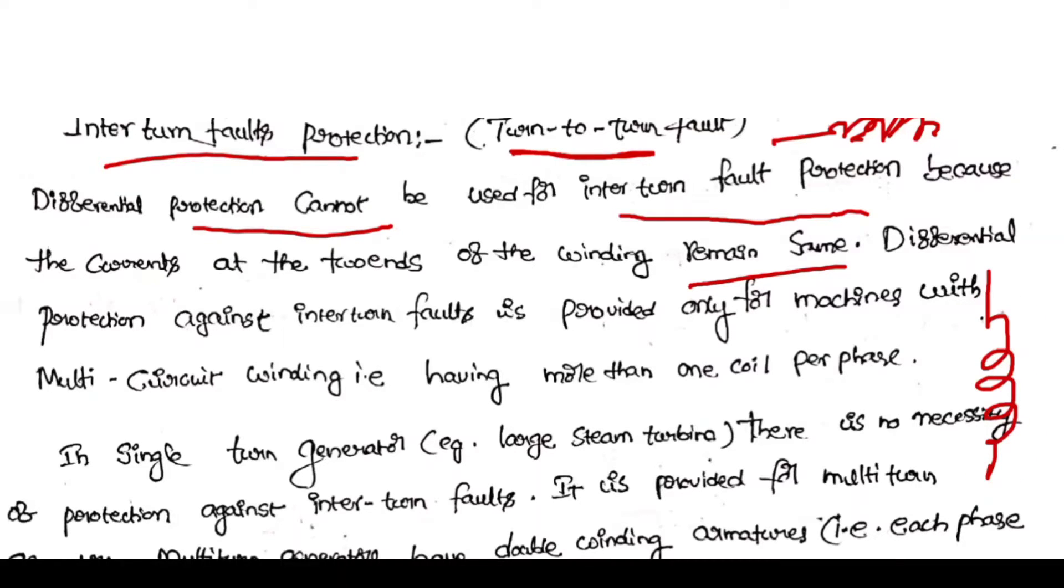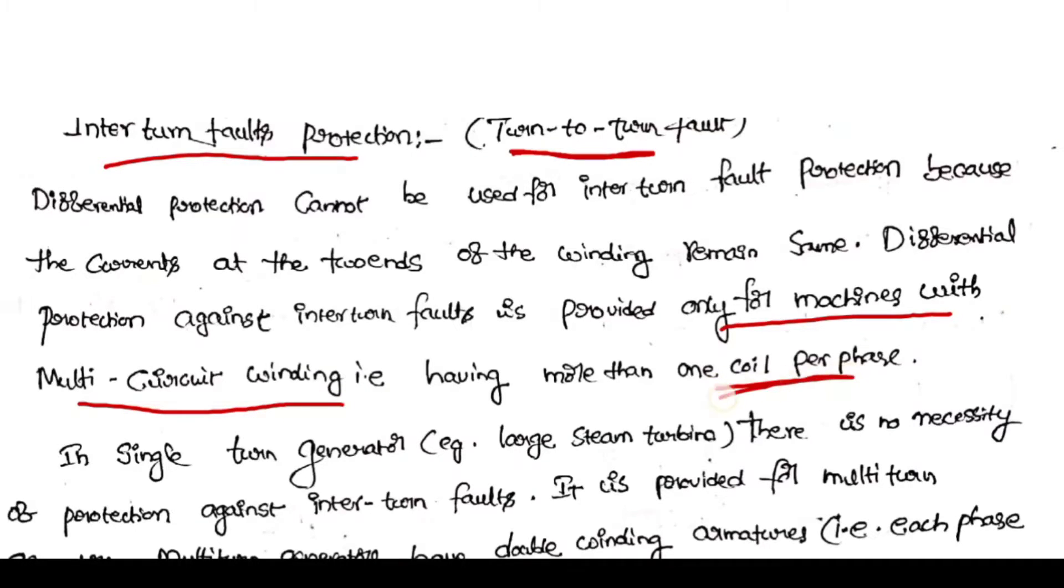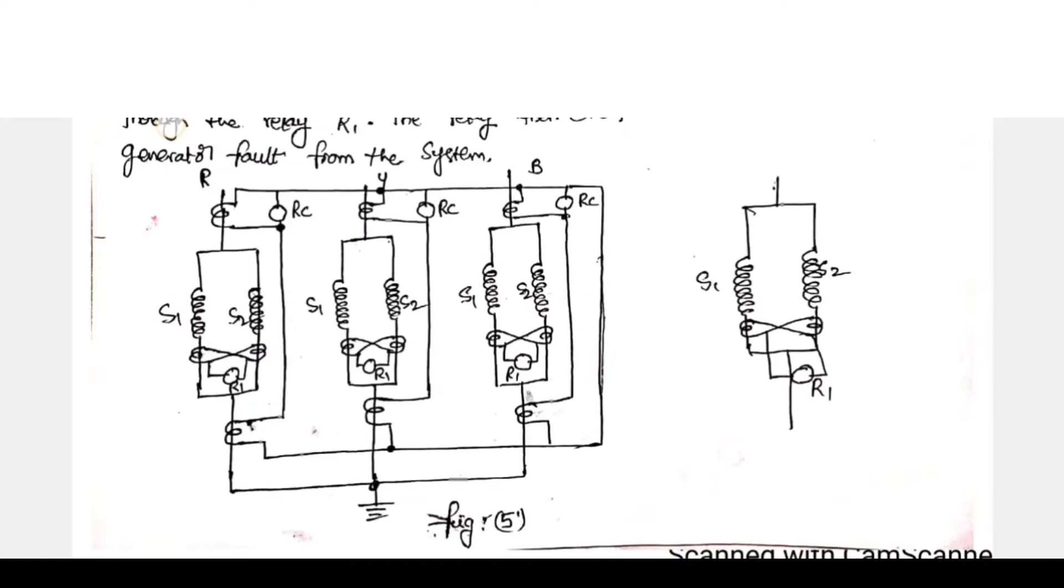Differential protection against inter-turn faults is provided only for machines with multi-circuit winding, that is number of coils per phase. If number of coils are used per phase, then we are using multi-turn, more number of coils per phase.